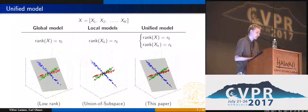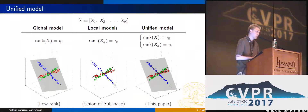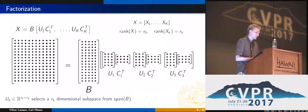The model we propose can be seen as a combination of traditional low-rank matrix factorization with the union of subspace model. In low-rank factorization, we fit a single subspace to all of our data, and in the union of subspaces, we partition our data and fit local subspaces to each partition. In our case, we still fit a single subspace, but within that subspace we fit multiple small subspaces to each partition. In this example, the three lines would be required to lie in a single shared plane.